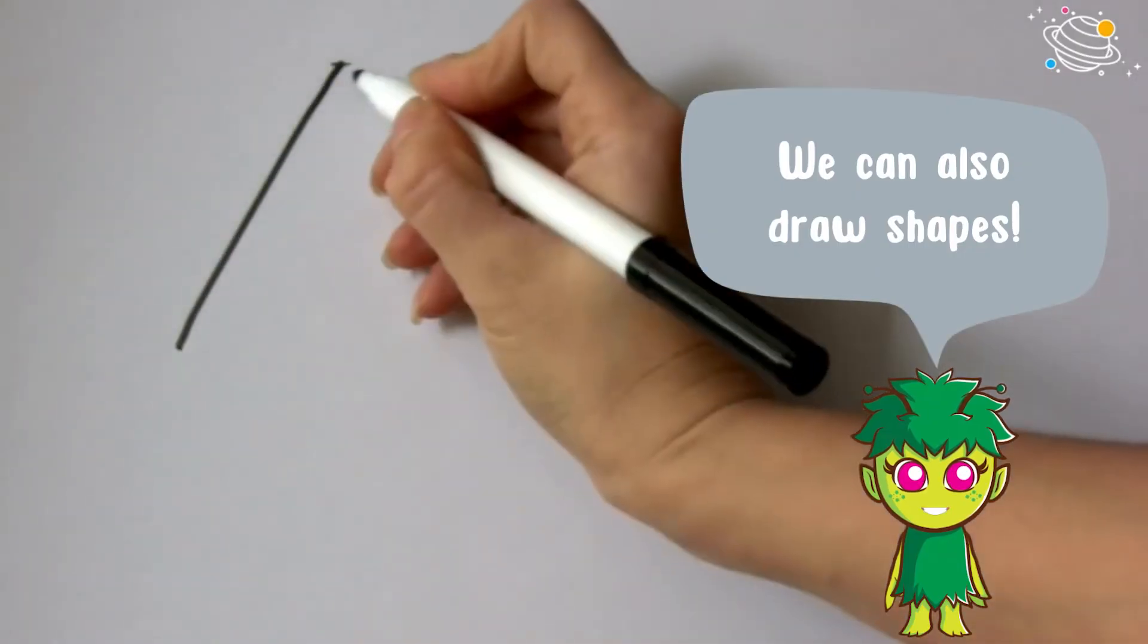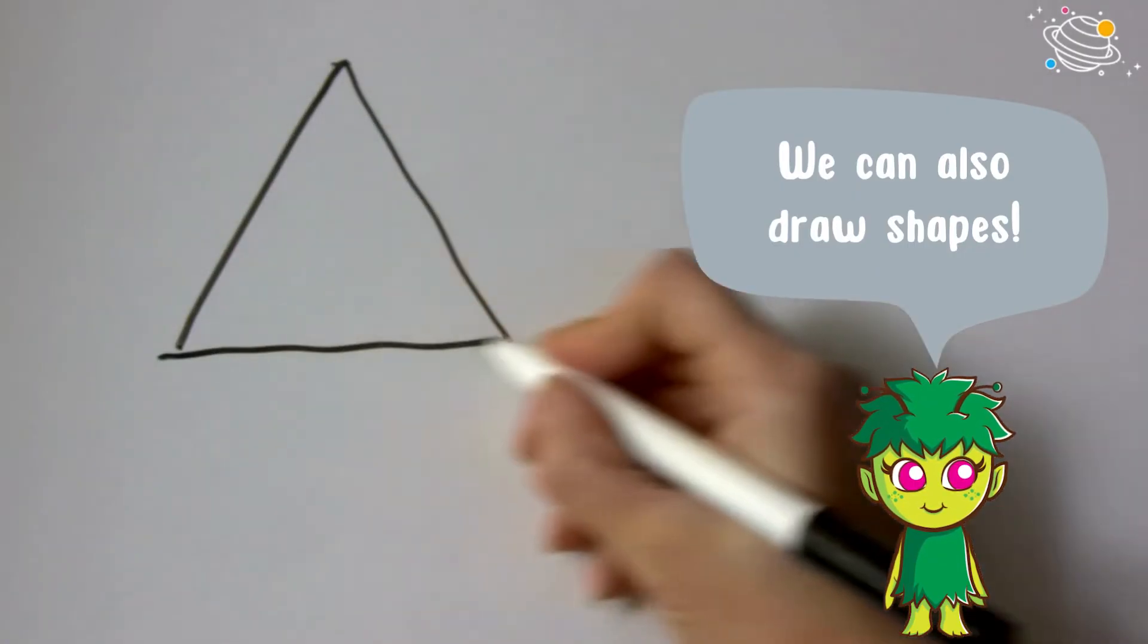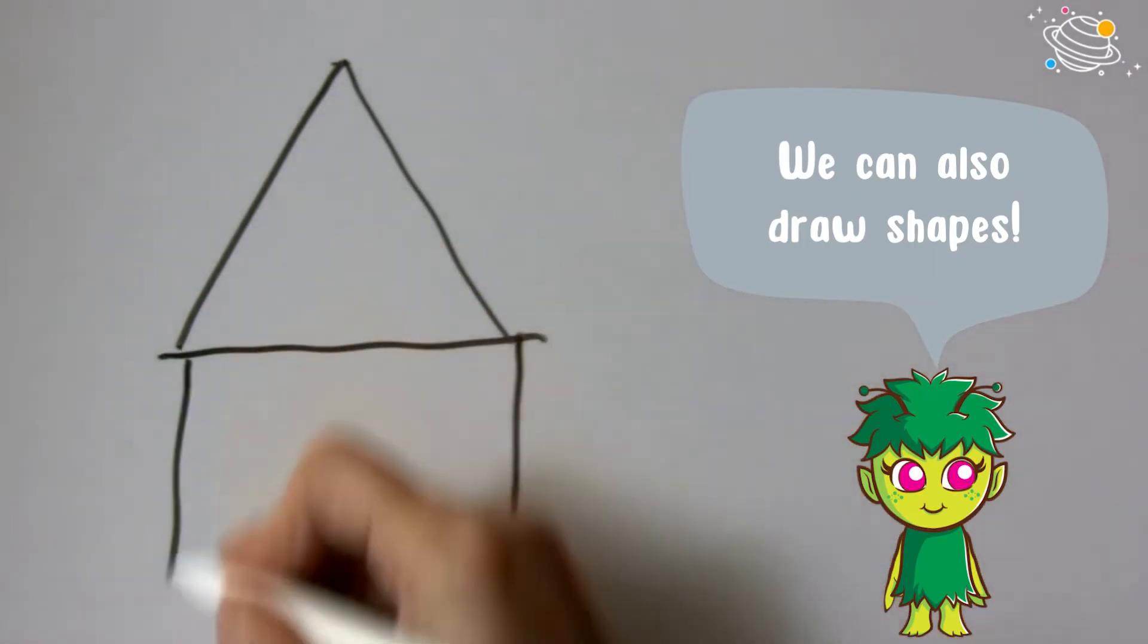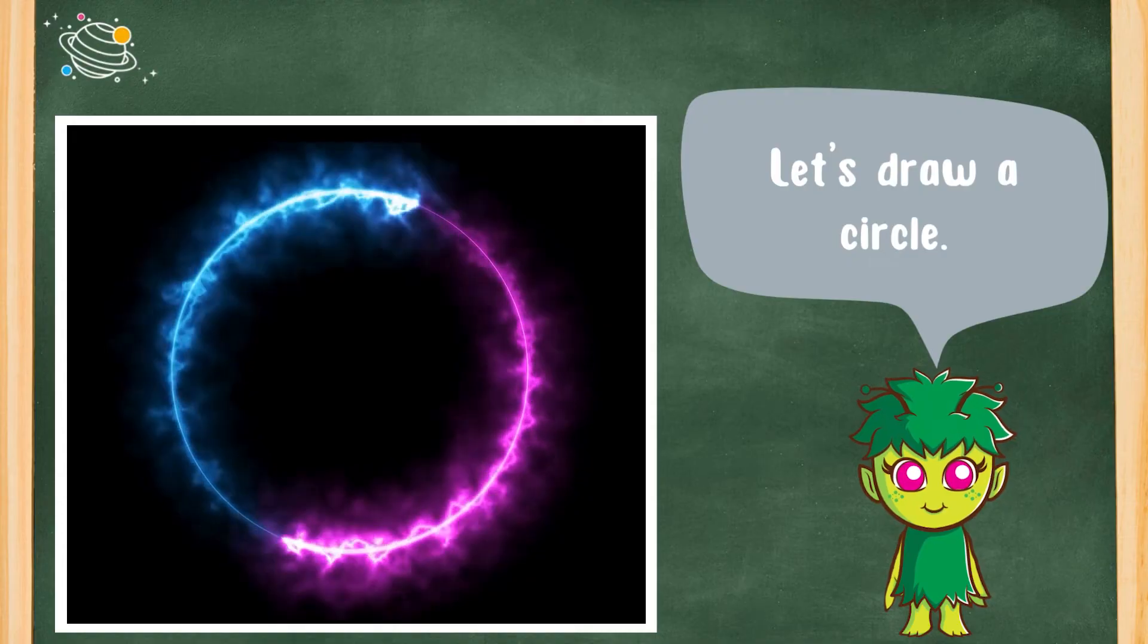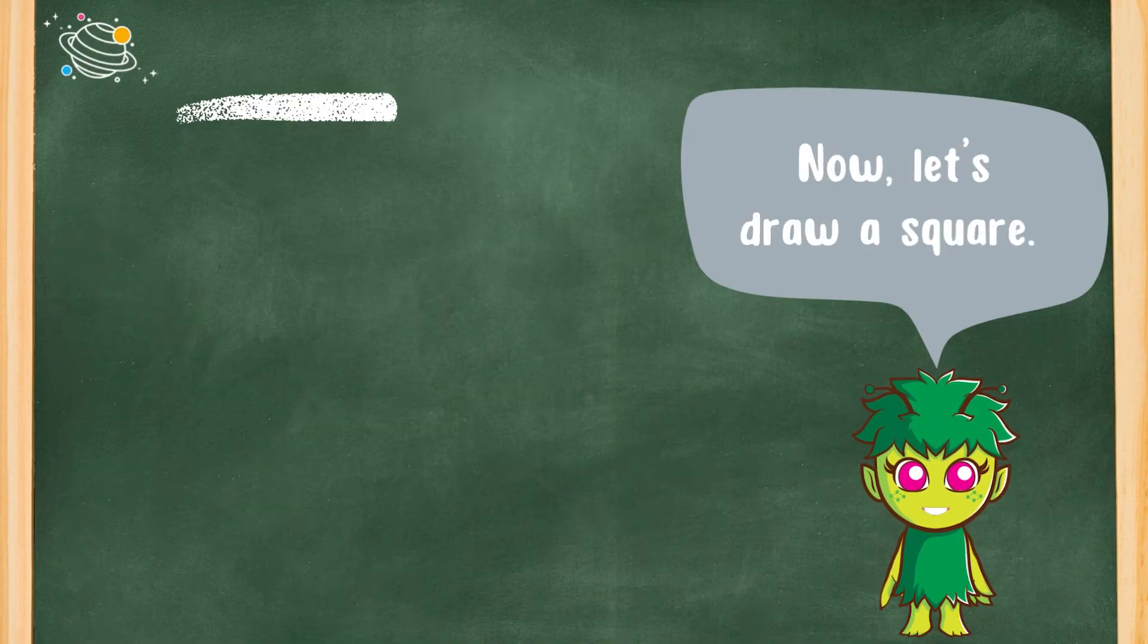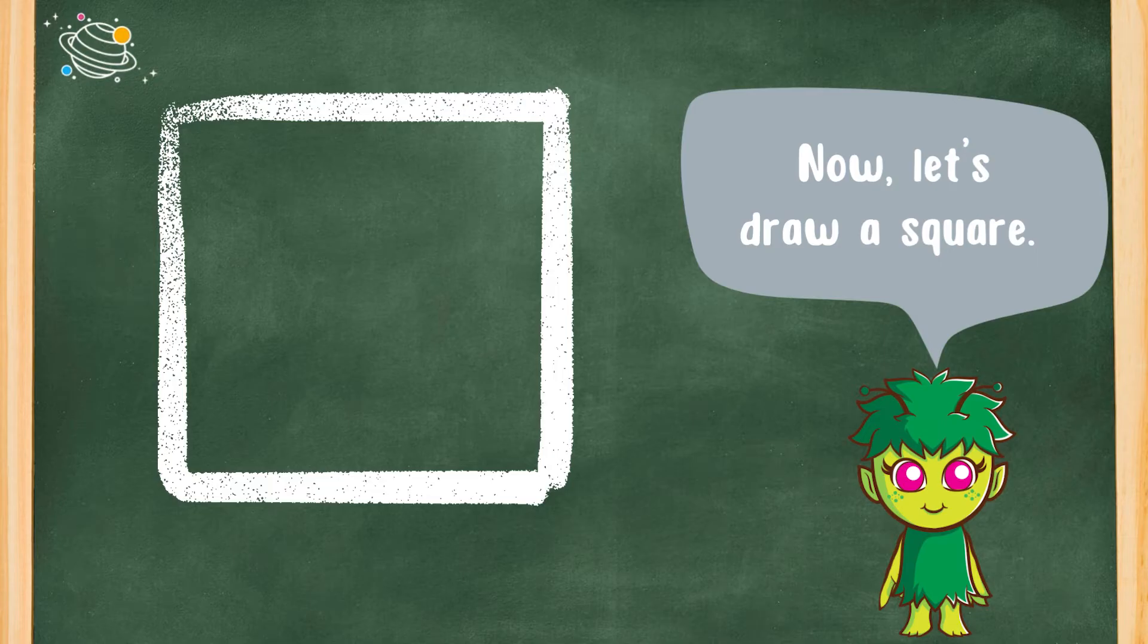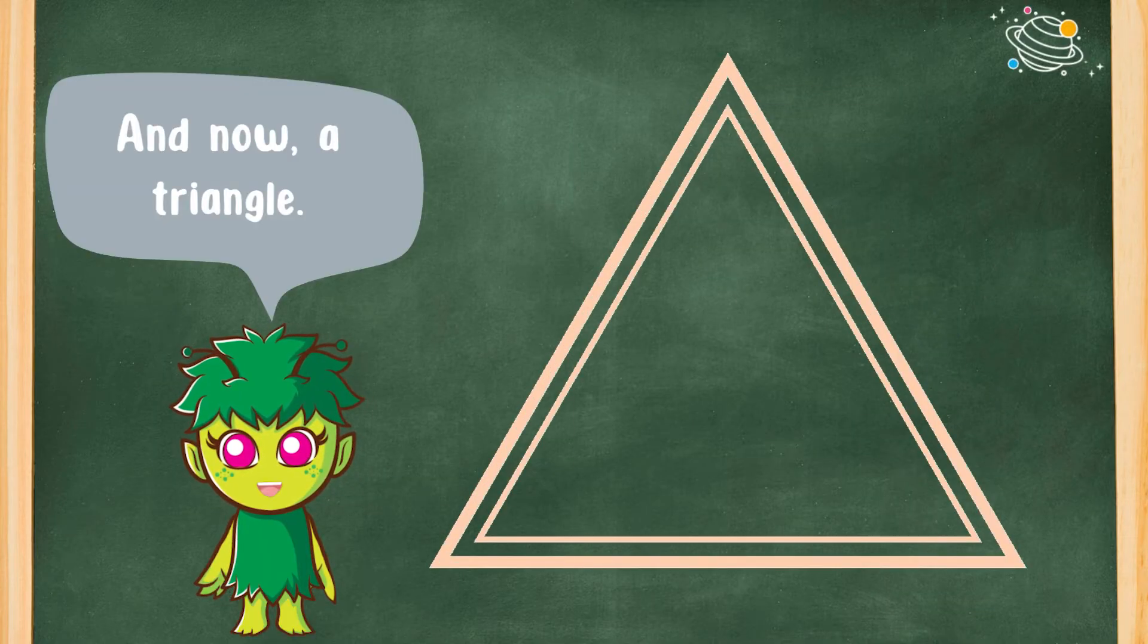We can also draw shapes. Let's draw a circle. Now, let's draw a square. And now, a triangle.